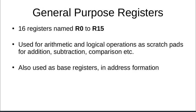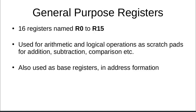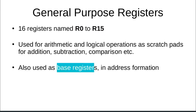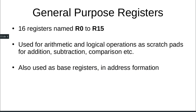There are 3 divisions of register types. The general purpose registers, as noted, are 16 of them each of 32 bit size, named R0 to R15. These registers are generally used for arithmetic and logical operations as scratch pads, for intermediate value storage in operations like addition, subtraction, and comparison. Registers R0 to R15 can also be used as base registers in address formation.